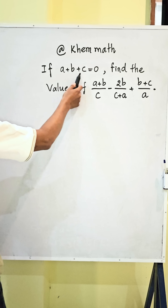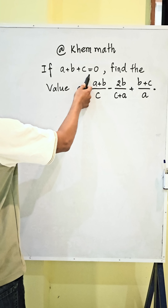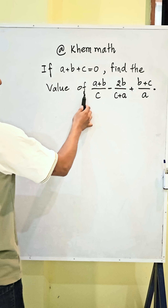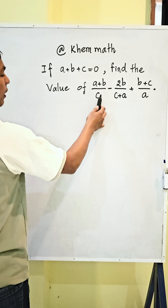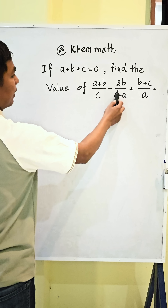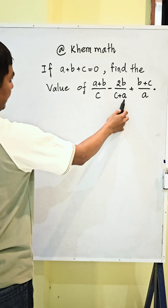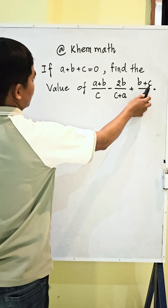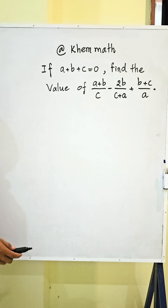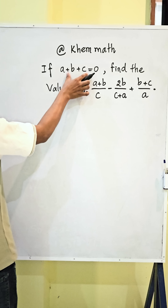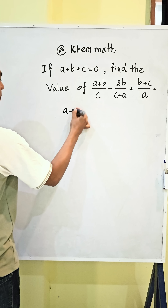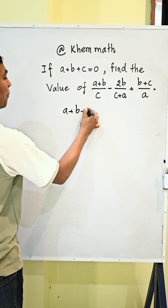If a plus b plus c equals zero, find the value of (a+b)/c minus 2b/(c+a) plus (b+c)/a. First, we use the equation a plus b plus c equals zero.